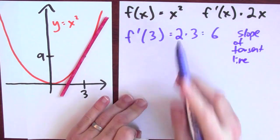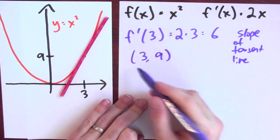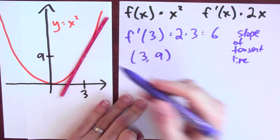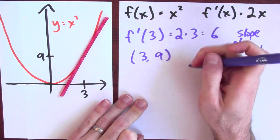I also know a point that the tangent line passes through. It should be passing through the point (3, 9). Right, the point (3, 9) is on the tangent line. So if I know the slope of the tangent line and I know a point on the line,